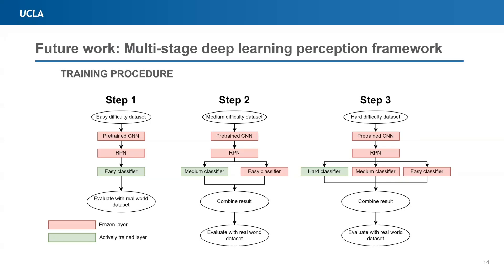The goal of this step is to force the medium classifier to develop new techniques to detect objects missed by the easy classifier, due to moderate occlusion, small object size, and crowdedness in the picture. The third step is also the same as the second step with the addition of the hard classifier, being trained on the most difficult dataset, with severe occlusion, smaller objects in the frame, and a lot of object crowdedness.